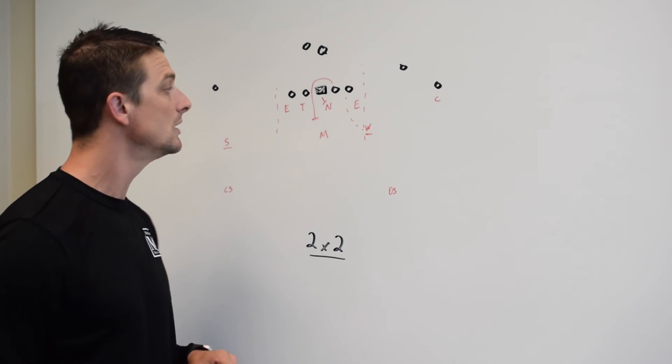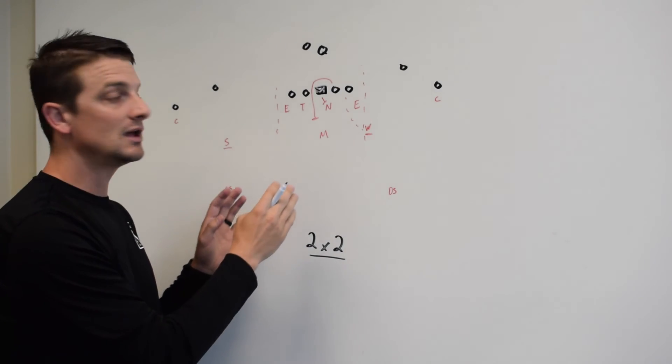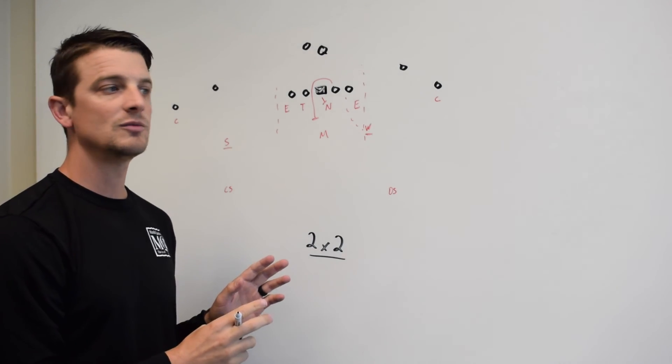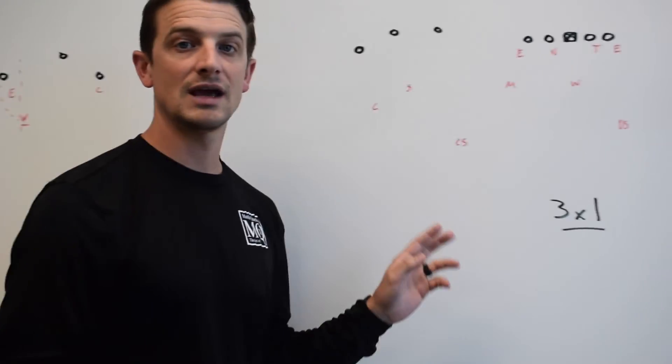So this is your cover downs, and then your overhangs, and what you're going to get from a box, an understanding box fits for 2x2. Let's transition over here to 3x1 and go through the same thing.